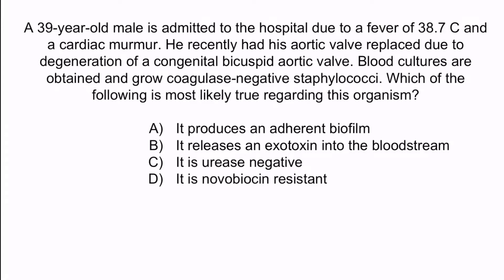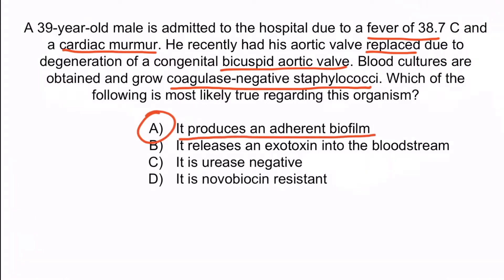From the question stem, notice that this patient has prosthetic valve endocarditis, deduced from the recent aortic valve replacement, fevers, and a cardiac murmur. The fact that the blood cultures grew coagulase-negative staphylococci is a dead giveaway that this is Staphylococcus epidermidis. Staph epidermidis is coagulase-negative — a high-yield point to remember. The correct answer is A: it produces an adherent biofilm. B is false because Staph epidermidis doesn't produce an exotoxin. C and D are false because Staph epidermidis is urease-positive and novobiocin-sensitive.